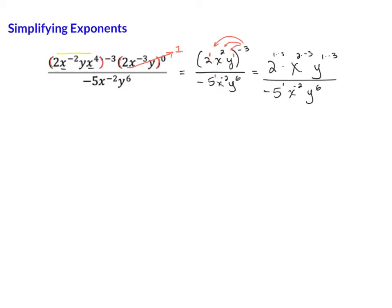So I'm going to come over here, and I'm going to simplify that. We have 2 to the negative 3 times x to the negative 6 times y to the negative 3. Oh, so many negatives. And on the bottom, we have negative 5 to the positive 1, x negative 2, y 6.